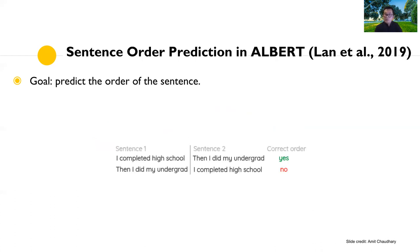There is also more recent work after BERT. For example, the ALBERT paper looks at predicting the order of sentences rather than correctness. Given two sentences — 'I completed high school' followed by 'then I did my undergrad' — this is the correct order. If we switch them to 'then I did my undergrad, I completed high school,' it switches the causal relationship. The label for the switched pair is false, and the model learns to predict true or false for automatically constructed examples to learn relationships between sentences.